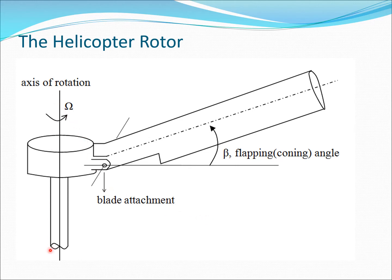Looking at a side view of the helicopter rotor: the blades rotate around the axis of rotation with an attachment point acting as a flapping hinge. The angle by which the blade is flapping is called beta (the Greek letter beta), known as the flapping angle — sometimes also referred to as coning. Essentially the blade goes up and down around this hinge.